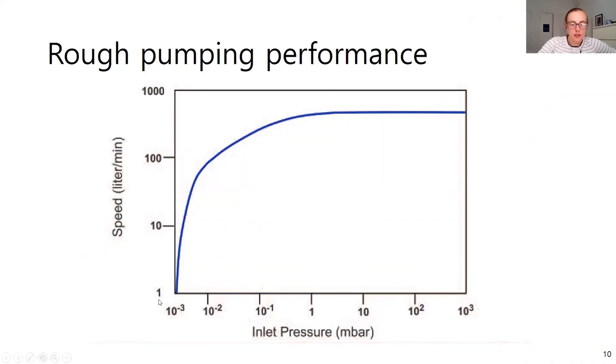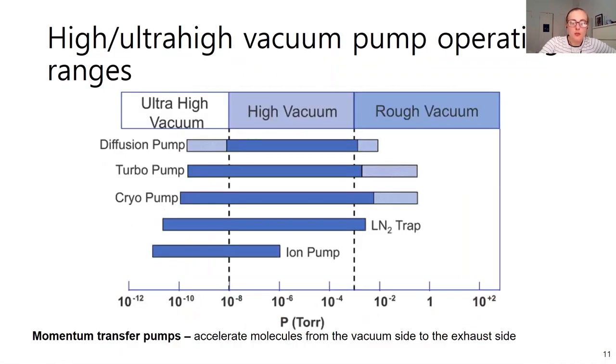This plot here is just showing how fast you're displacing that gas, how you're changing your pressure and the speed that eventually you'll reach some limit that it slows down as your pressure is decreasing. So you'll get to a certain point where the roughing pump reaches its limits at these lower pressures. Then you have to close off the roughing pump chamber and then move on to your high vacuum or ultra high vacuum pumps.